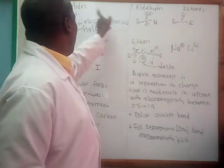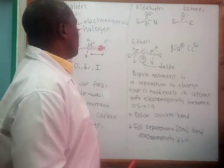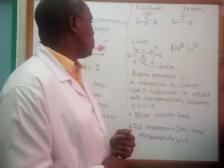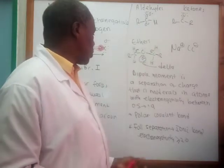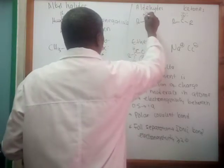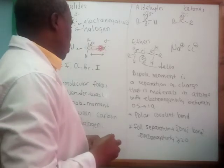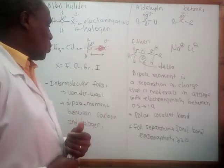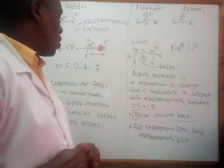For the carbonyl group, you have a carbon-oxygen double bond. Carbon is more electropositive than oxygen, so there will be a partial positive on carbon and partial negative on oxygen — that makes it a polar covalent bond. The dipole moment will be directed toward the oxygen. This polar covalent bond is available in compounds such as alkyl halides, aldehydes, ketones, and ethers.